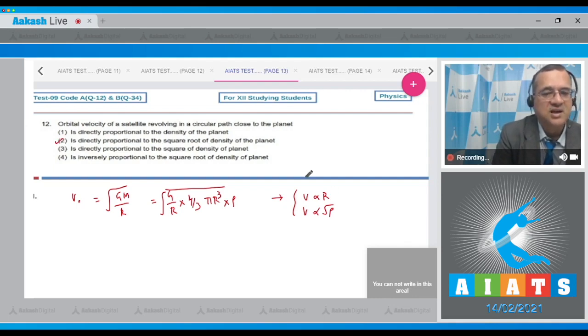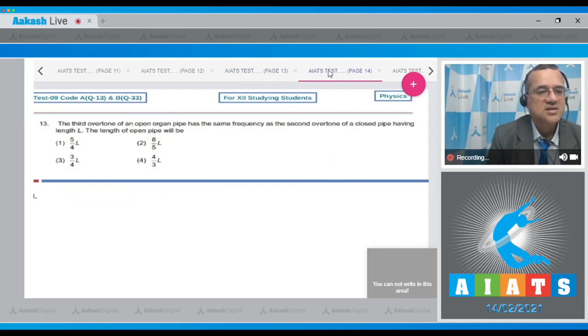Question number 13: Third overtone of an open pipe has the same frequency as second overtone of the closed pipe having the length L. The length of the open pipe is - four options.